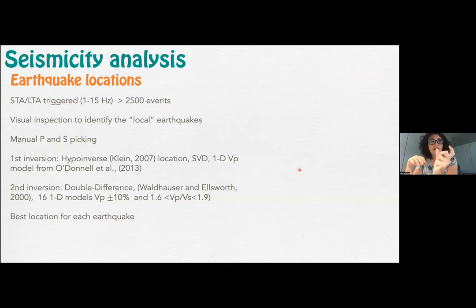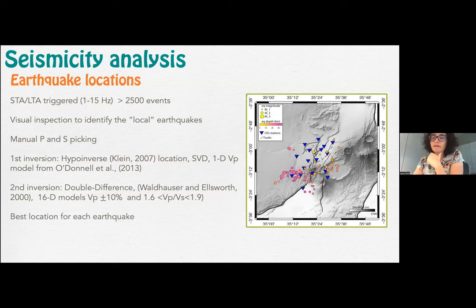After identifying the local earthquakes occurring within the seismic network, we manually picked the P and S waves. Then we ran two rounds of location, one with a 1D velocity model and simple least square inversion, and the second using the double difference algorithm and several 1D models. For each earthquake, we selected the best location. This is the final seismicity map that we obtained.